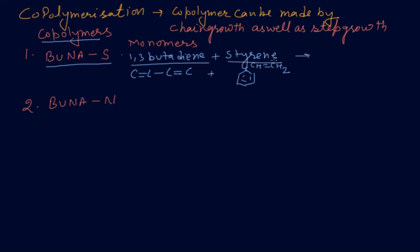BUNA-S is a very important copolymer used for manufacturing auto tires, floor tiles, footwear components, and cable insulation.